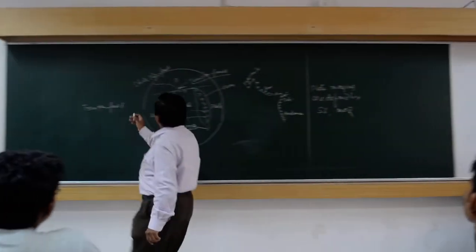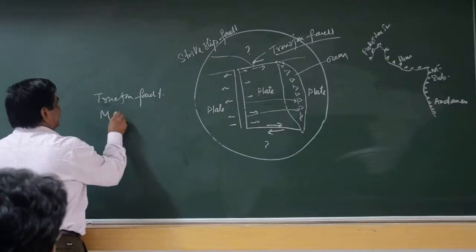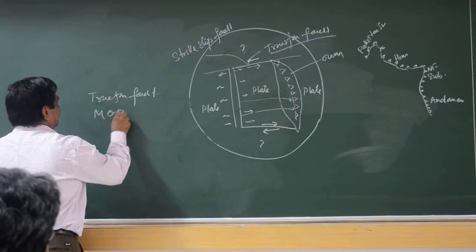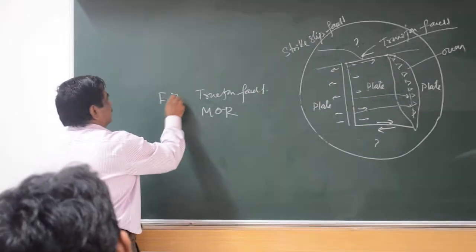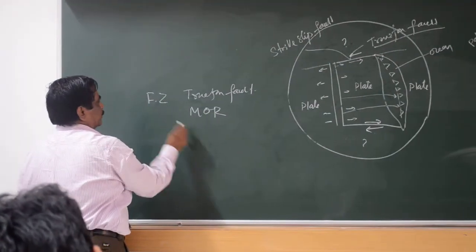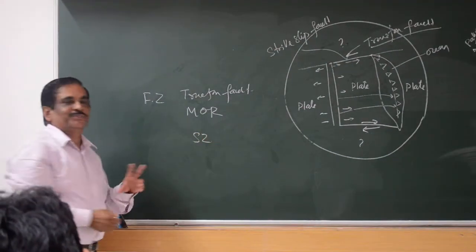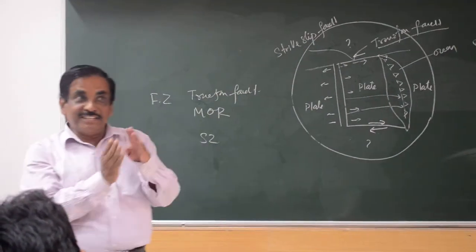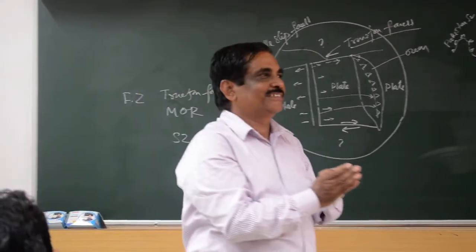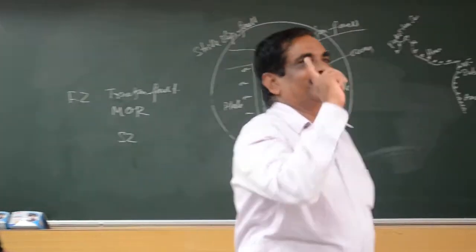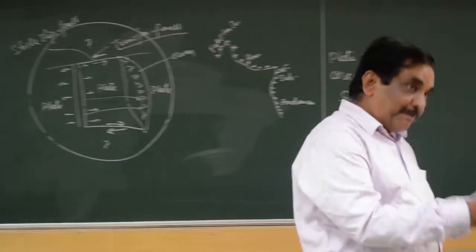For the crust-building process, the mid-oceanic ridge is called a spreading zone, the subduction zone is called a suppression zone, and the transform fault — these are the three tectonic elements responsible for your crustal growth.